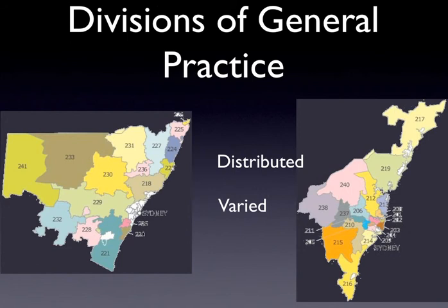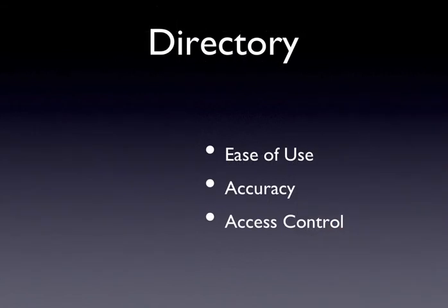Maintaining and developing a system for divisions of general practice has a number of challenges. First of all, they are distributed over quite a wide range geographically, with different types of climate and quite large distances. They're also quite varied, not just in whether they're rural and regional versus city, but also in terms of the IT systems they support. Where contacts are held may vary from an Excel spreadsheet to a full-blown CRM, Client Relationship Management System, and so we need to import and export data from those to maintain the directory.